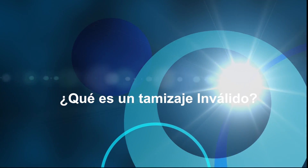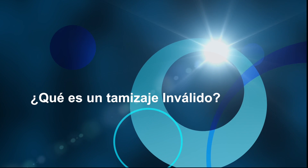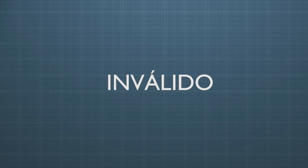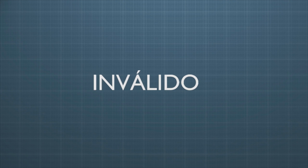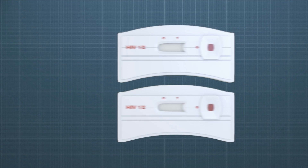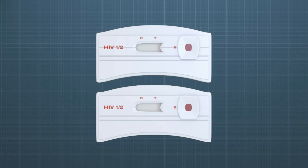¿Qué es un tamizaje inválido? Inválido quiere decir que no se evidencia la línea control después de haber realizado la prueba. Este resultado nunca se reporta y se debe practicar nuevamente la prueba con un nuevo dispositivo.